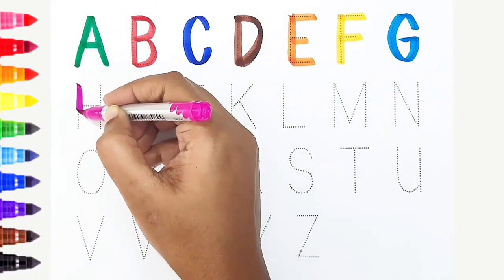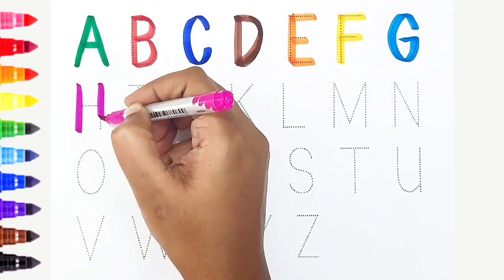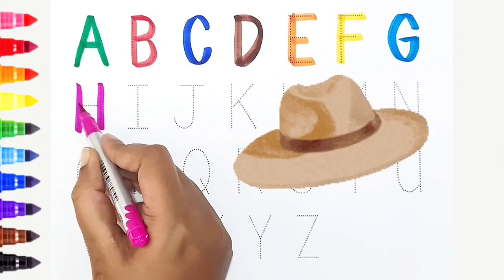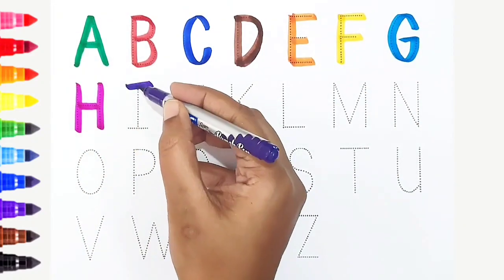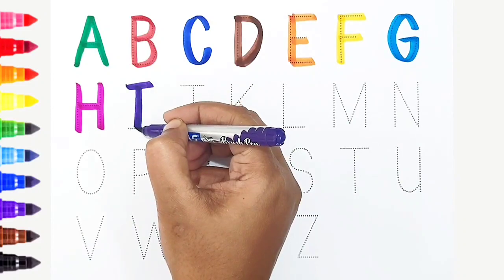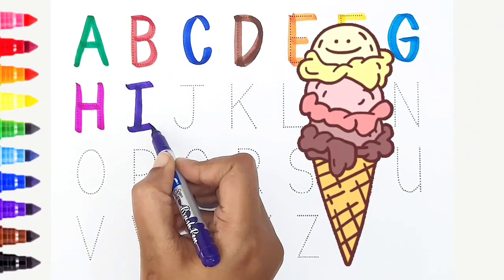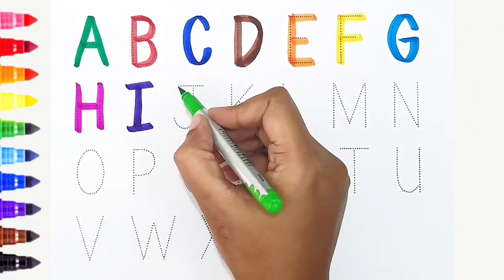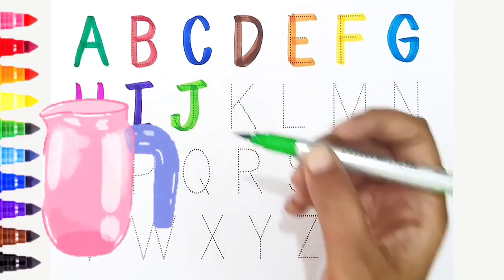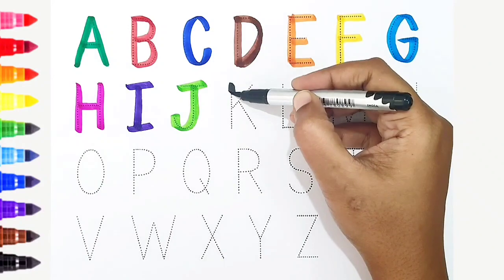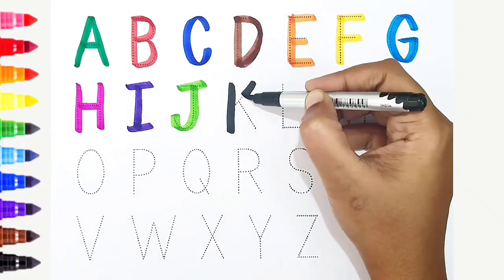H, dark pink color, H is for hat. I, violet color, I is for ice cream. J, light green color, J is for jug. K, black color, K is for kangaroo.